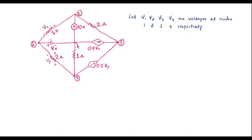In nodal analysis, first we have to mark all branch currents. Let current through this branch be I1, let current through this branch be I2, let current through this branch be I3, and let current through this branch be I4. Since we have covered all the branches — here we have a voltage source, so no need to give the current direction. Here also we have a voltage source, and here already there is a current direction marked.